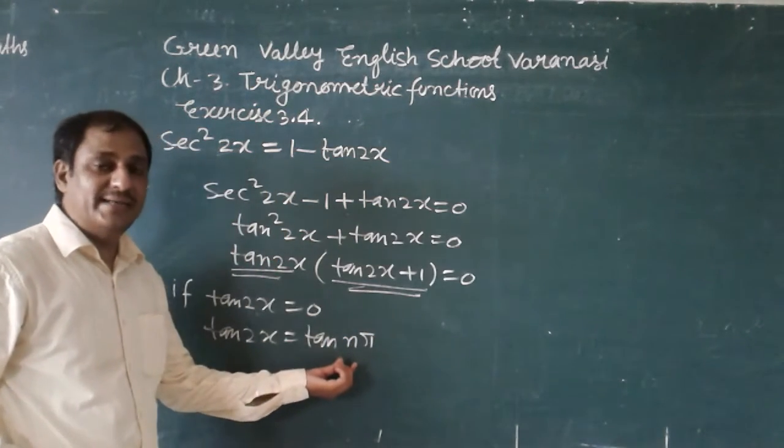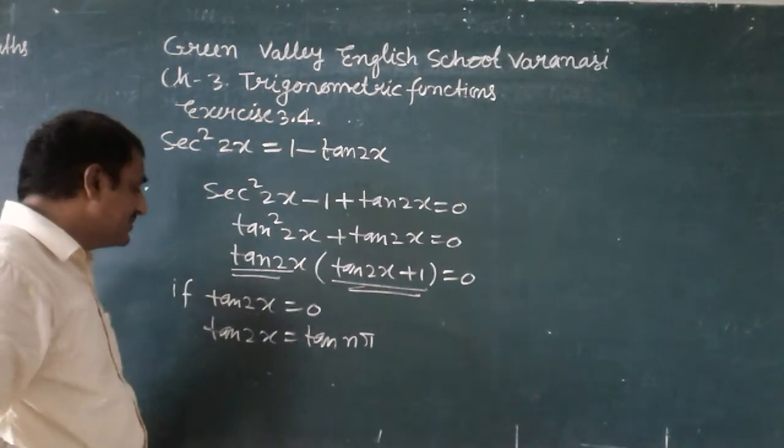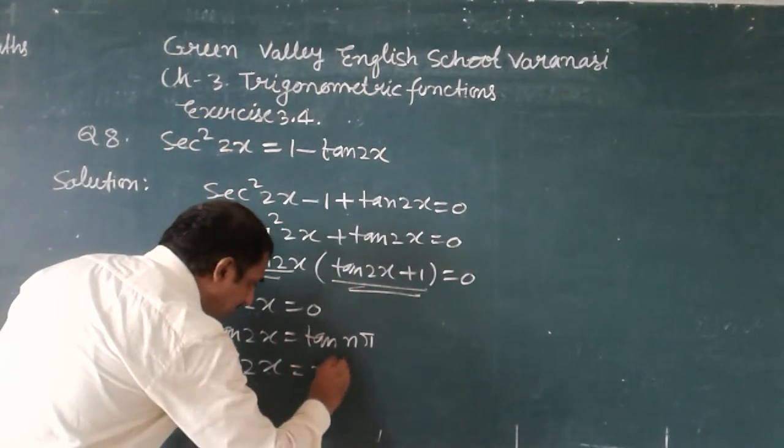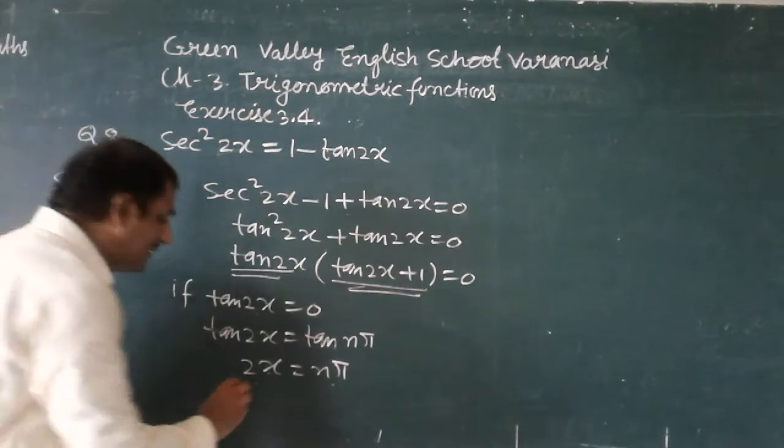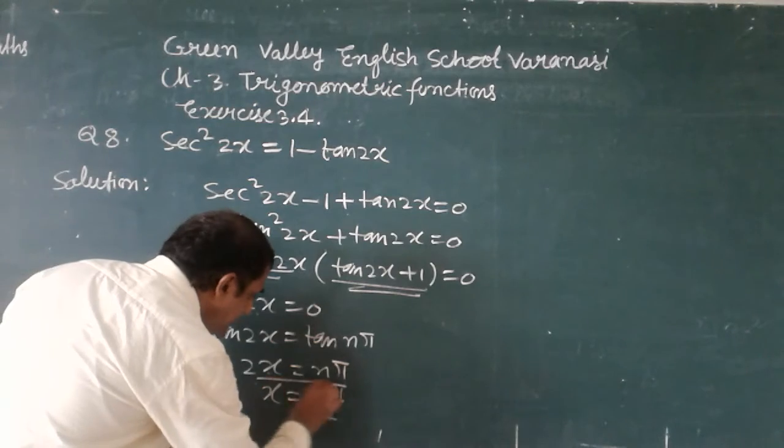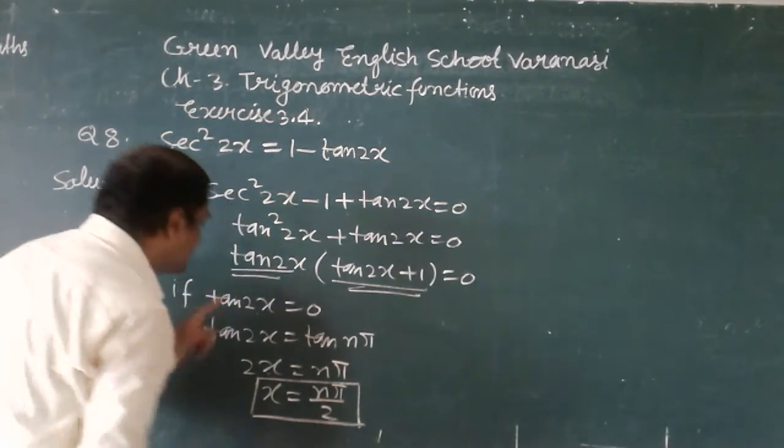Hence, the value of 2x is equal to nπ. Now, x is equal to nπ/2. This is the general solution for this one.